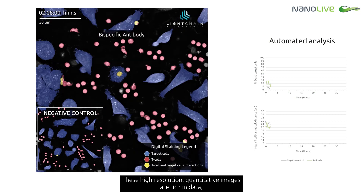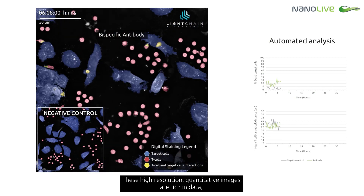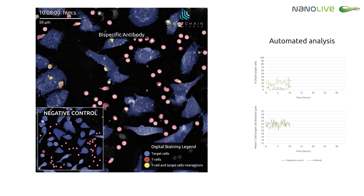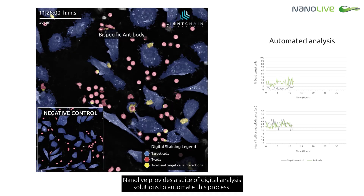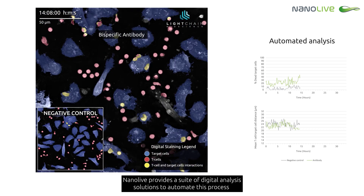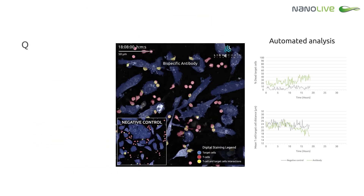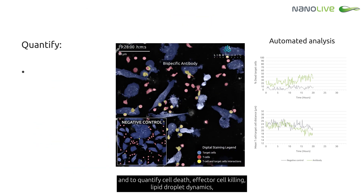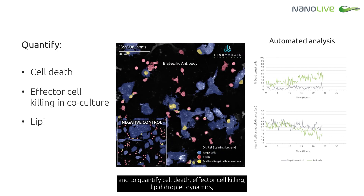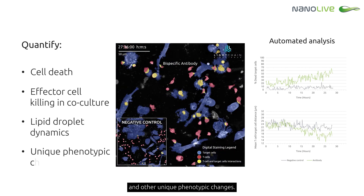These high-resolution quantitative images are rich in data which can be extracted by AI analysis. Nanolive provides a suite of digital analysis solutions to automate this process and to quantify cell death, effect on cell killing, lipid droplet dynamics, and other unique phenotypic changes.